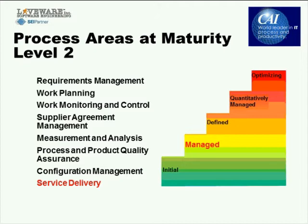There are no process areas you have to comply with to be appraised at maturity level one through CMMI using a SCAMPI. But there are eight process areas that you must comply with to be appraised at maturity level two — the managed level.